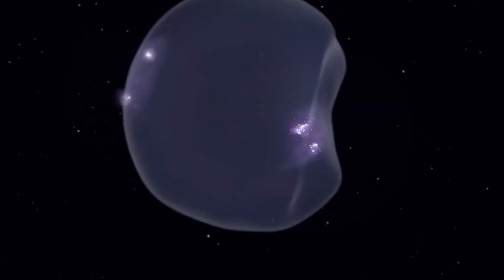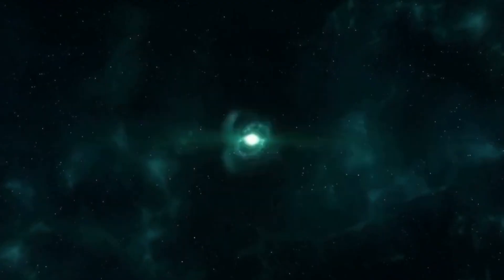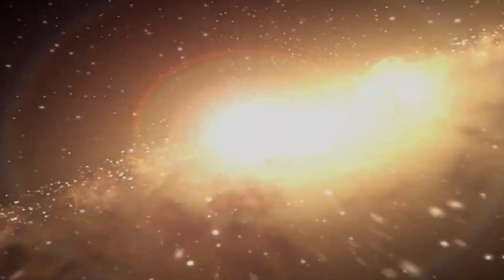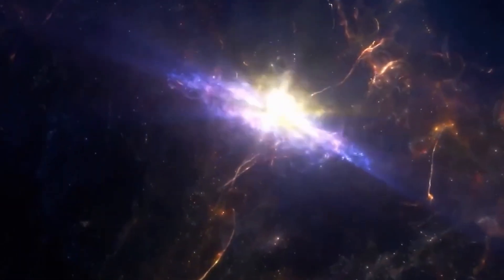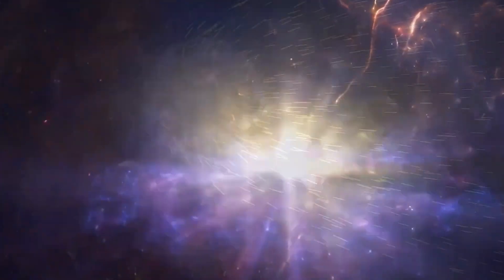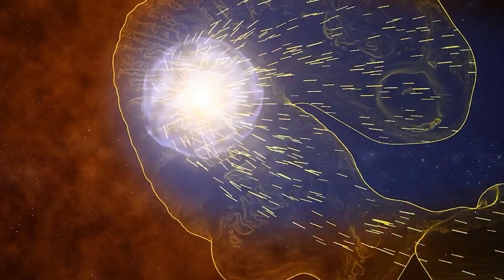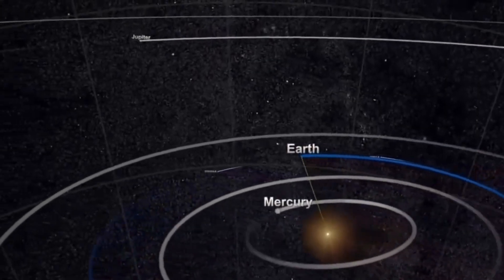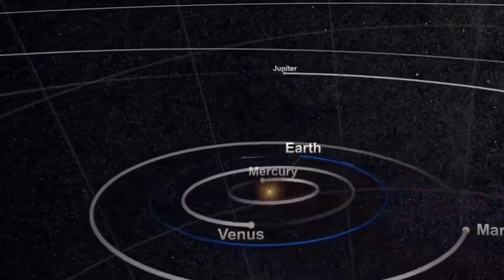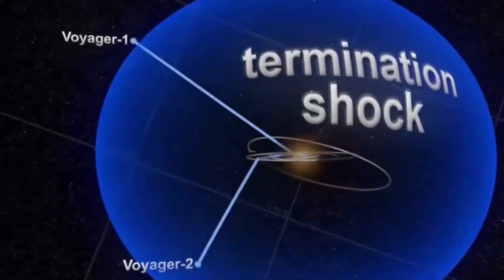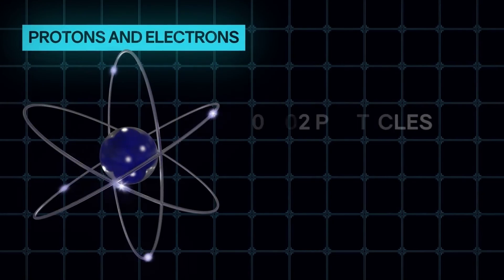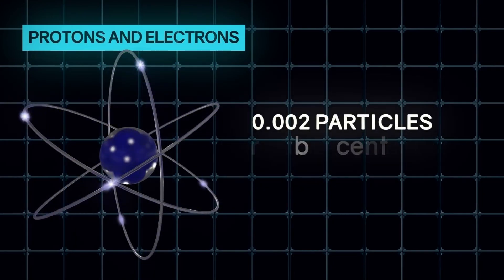This boundary is called the heliopause. On it, the speed of the solar wind, the flow of charged particles emitted by the sun, or in other words, solar plasma, drops to zero. The area between the sun and the heliopause is called the heliosphere. This is a kind of bubble in which all the planets of the solar system are immersed. At this boundary, the density of protons and electrons is 0.002 particles per cubic centimeter.